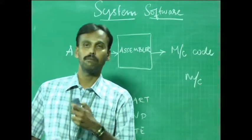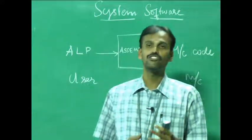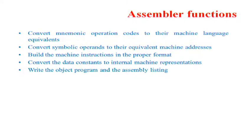The functions of an assembler are: first, convert mnemonic operation codes to their machine language equivalents; second, convert symbolic operands to their equivalent machine addresses; third, build the machine instructions in proper format; fourth, convert data constants to an internal machine-dependent representation; and finally, write the object program and the assembly listing.